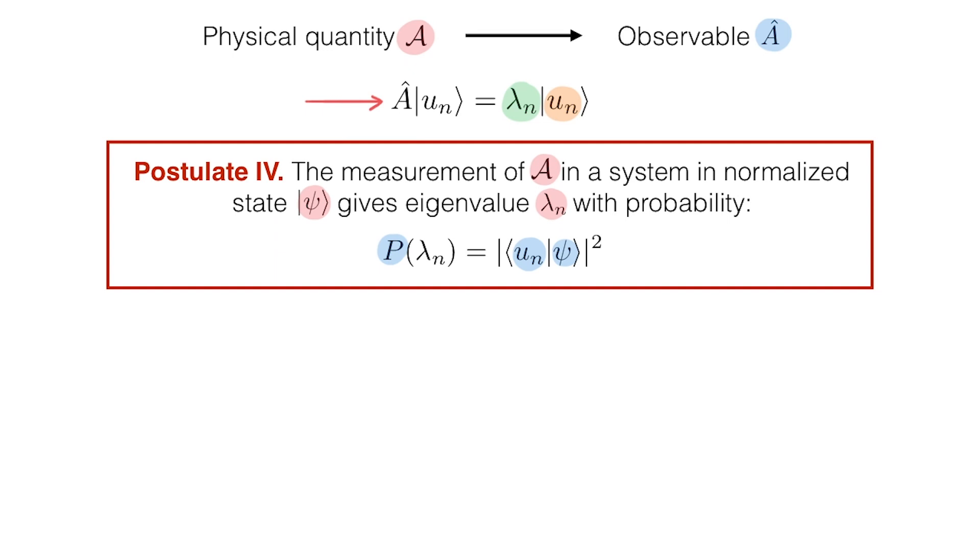We should also remember that we can write the state psi in the basis of eigenstates u n of the operator A-hat, and the expansion coefficients c are given by the projection of psi onto the u basis states. Using these c coefficients we can rewrite the probability P of measuring eigenvalue lambda n in the alternative form absolute value of c m squared.